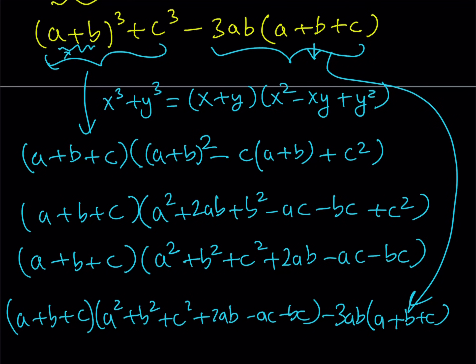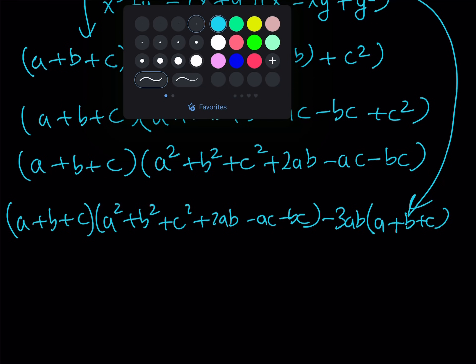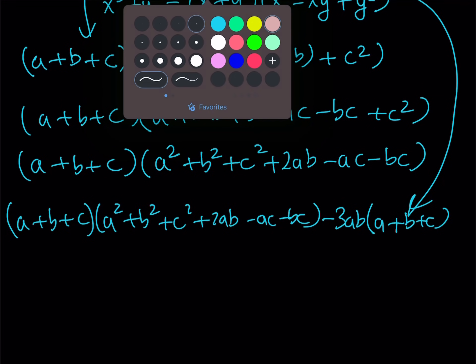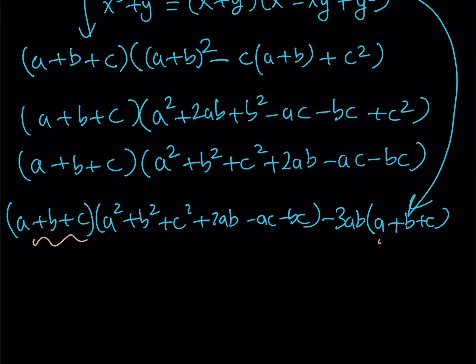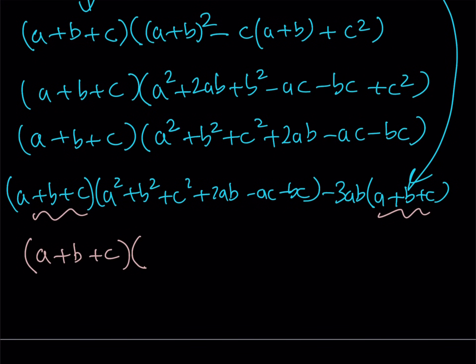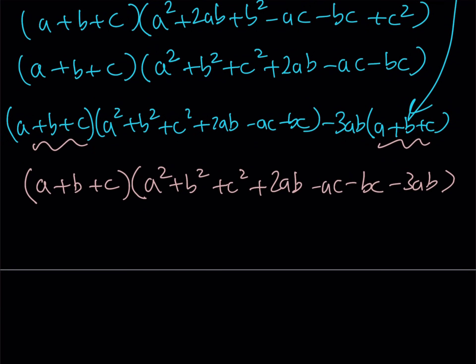a plus b plus c is a common factor. And then the other factor is going to be made up of a squared plus b squared plus c squared plus 2ab minus ac minus bc minus 3ab. I know this kind of looks complicated, but notice that it's going to simplify real nice.